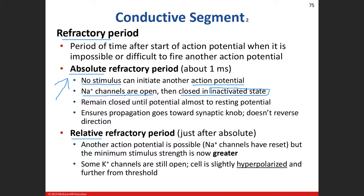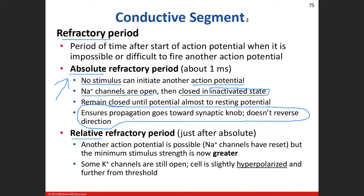Once we get back to the resting membrane potential of negative 70, that's when the inactivation gate will open up — but by then the activation gate is closed. The inactivated state keeps the action potential moving in one direction toward the synaptic knobs, not back toward the receptive segment. The only way to get the inactivation gate to reopen is to return to the resting membrane potential of negative 70.